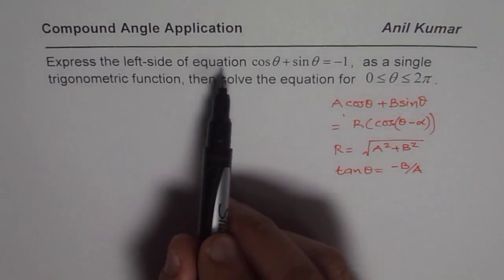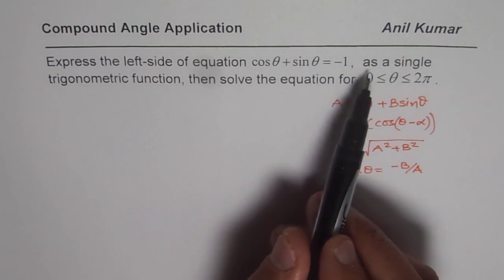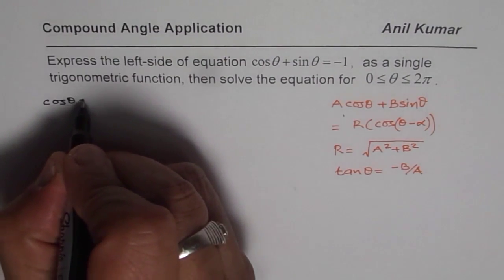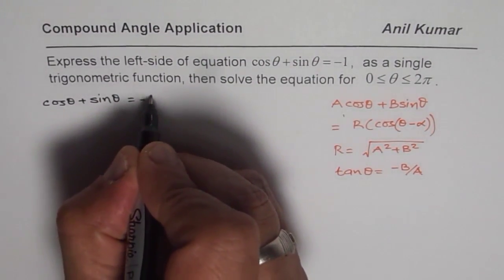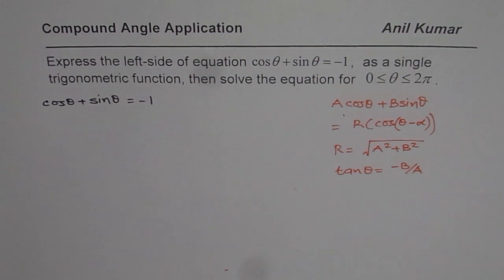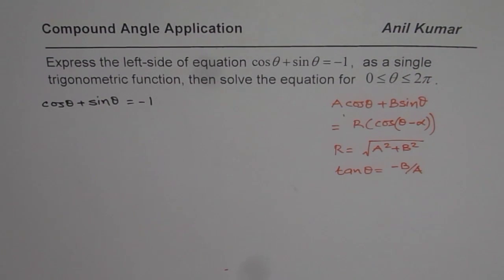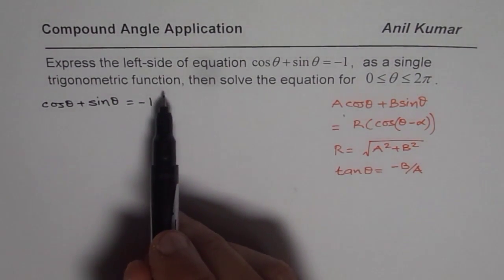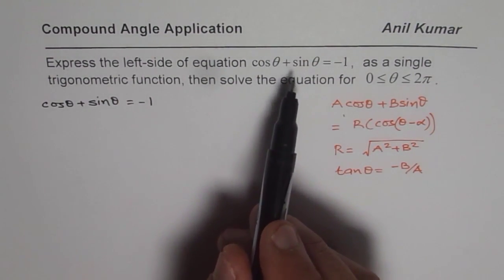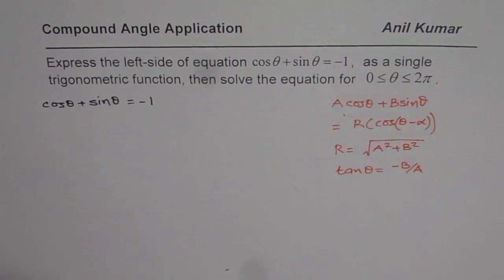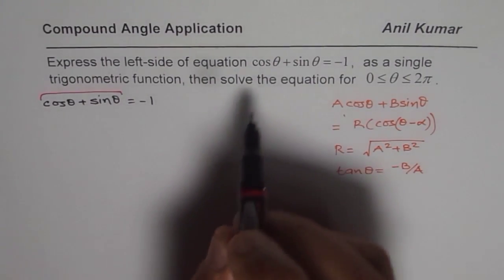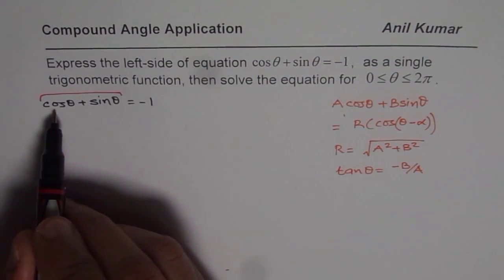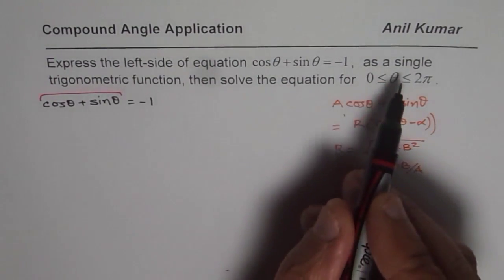The question asks us to express the left side of the equation cosθ + sinθ = -1 as a single trigonometric function, then solve the equation. This equation looks extremely simple, but if you sit down solving it, it may be very difficult. The wave function becomes handy here. So first we will only consider cosθ + sinθ and write it as a single trigonometric function, which in our case is going to be r·cos(θ - α).